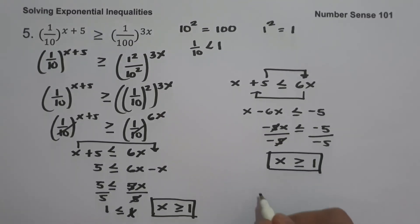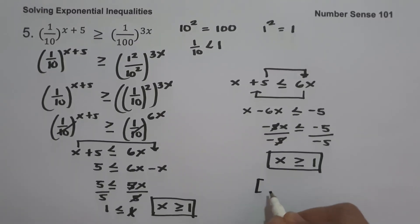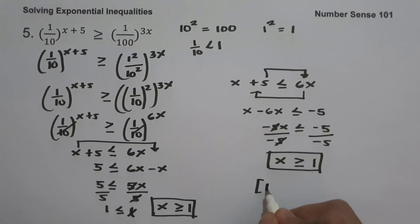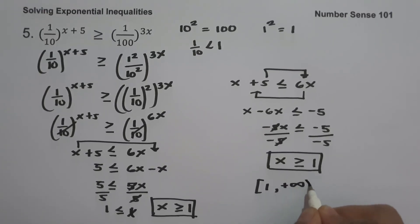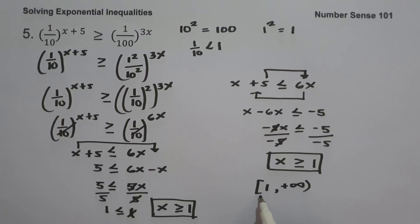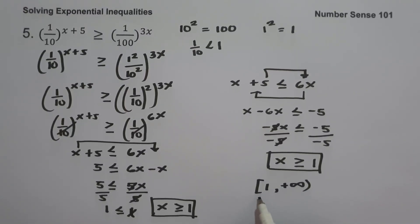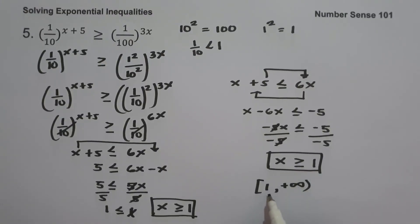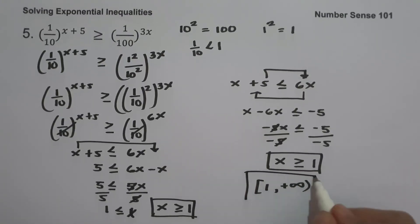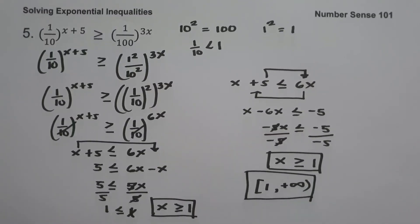The solution set is from 1 up to positive infinity. We use a bracket because our inequality symbol is greater than or equal to, meaning 1 is included in our solution. And this will be our answer. I hope you've learned from this video. Thank you so much for watching and God bless us all.